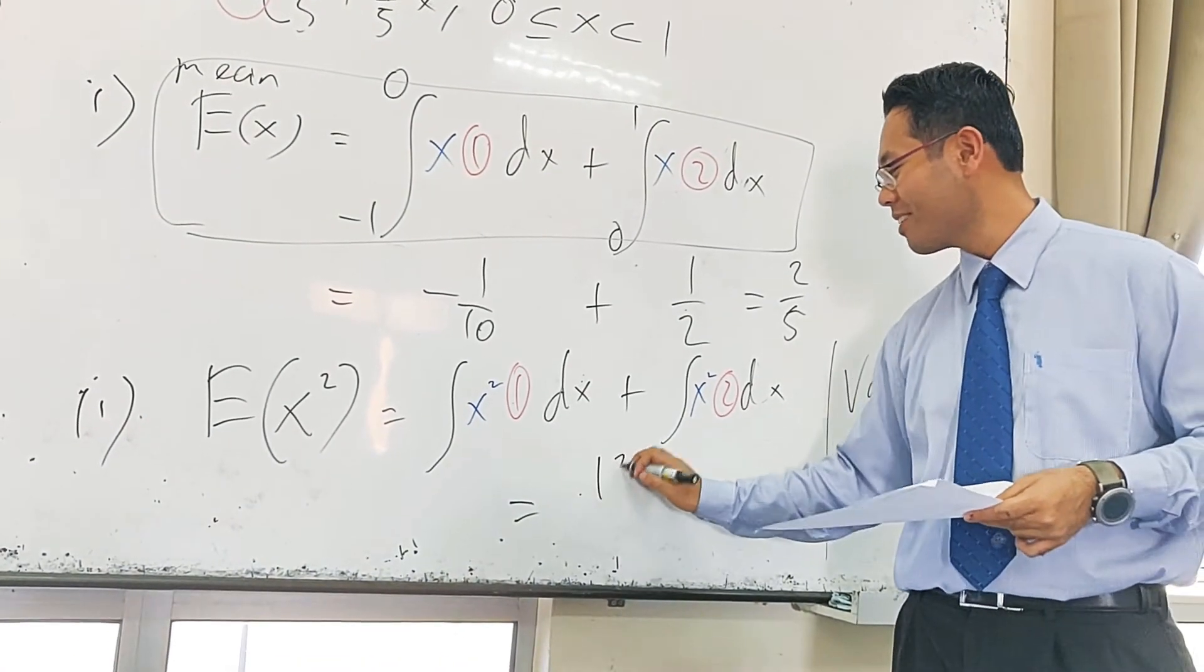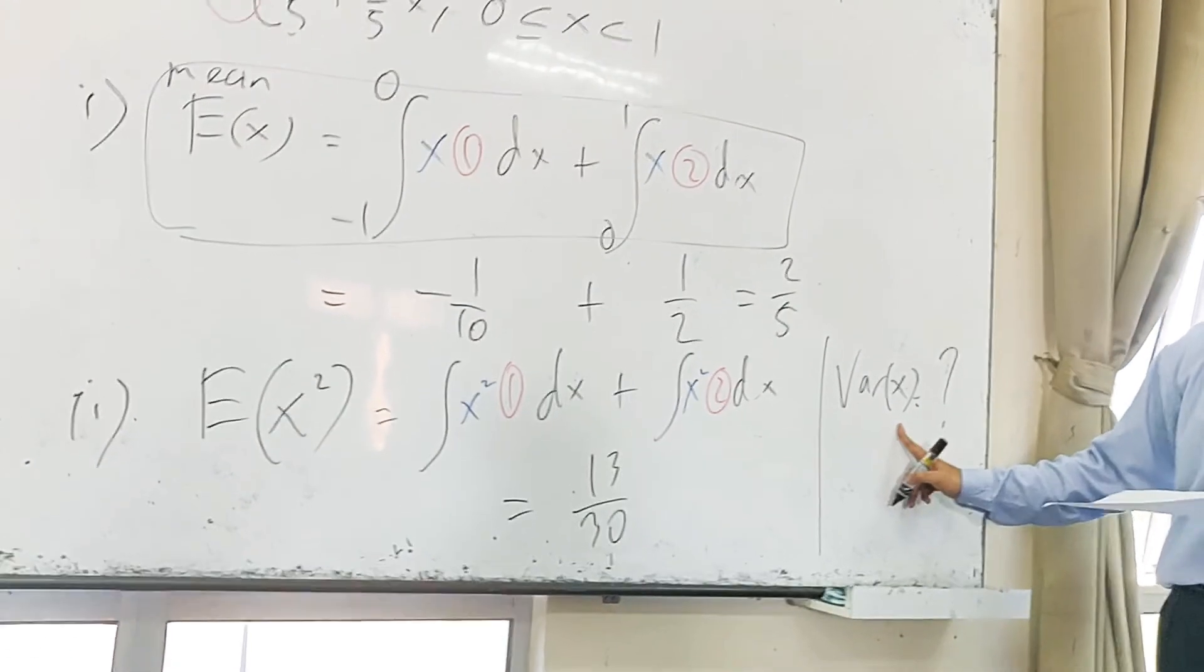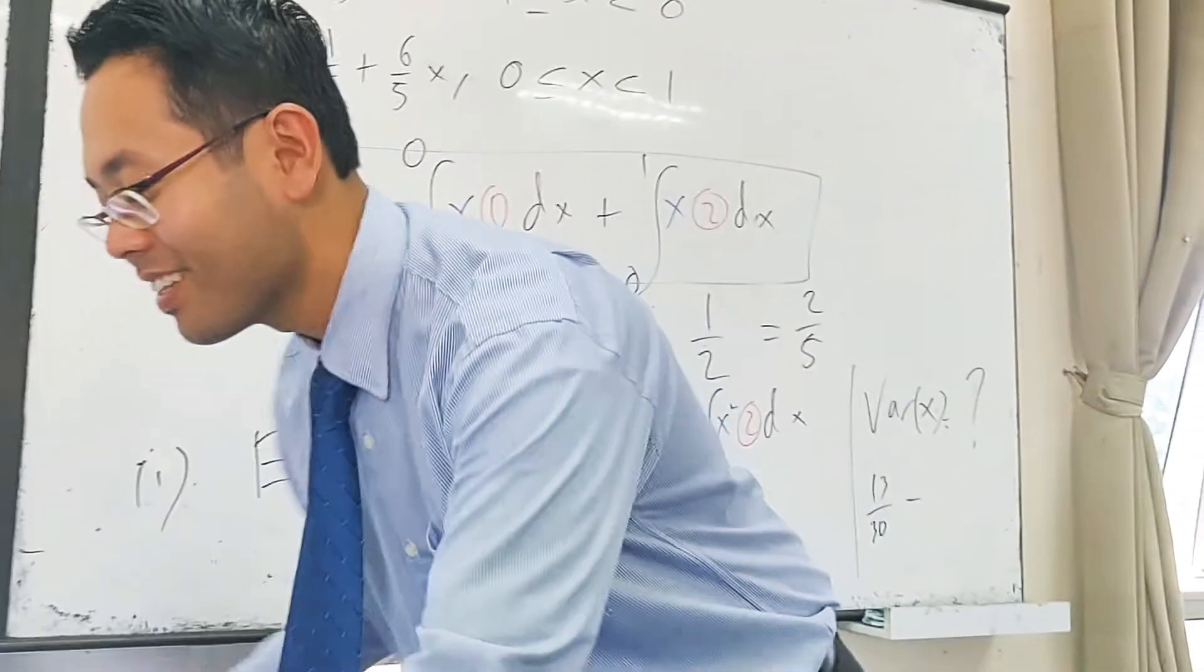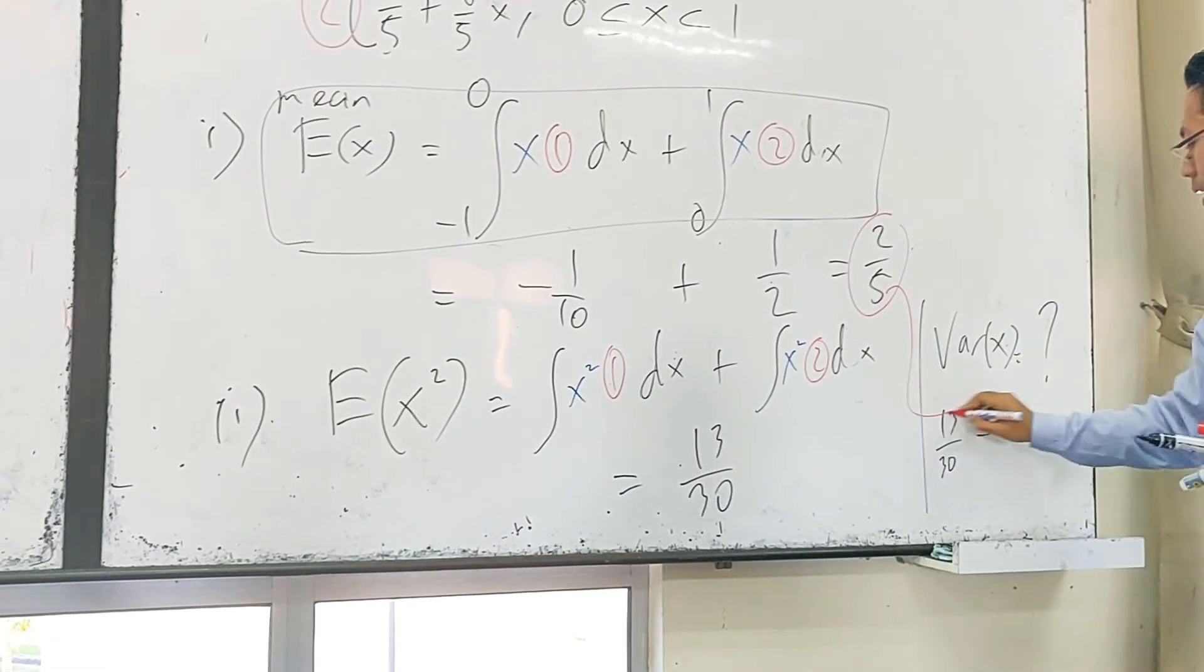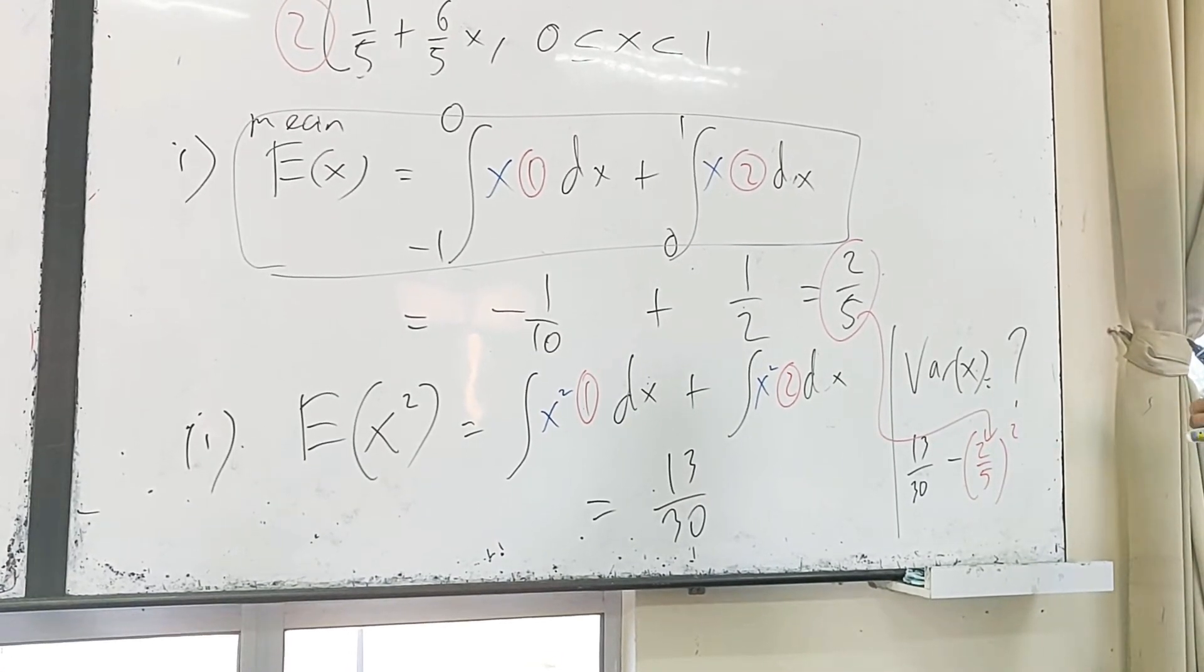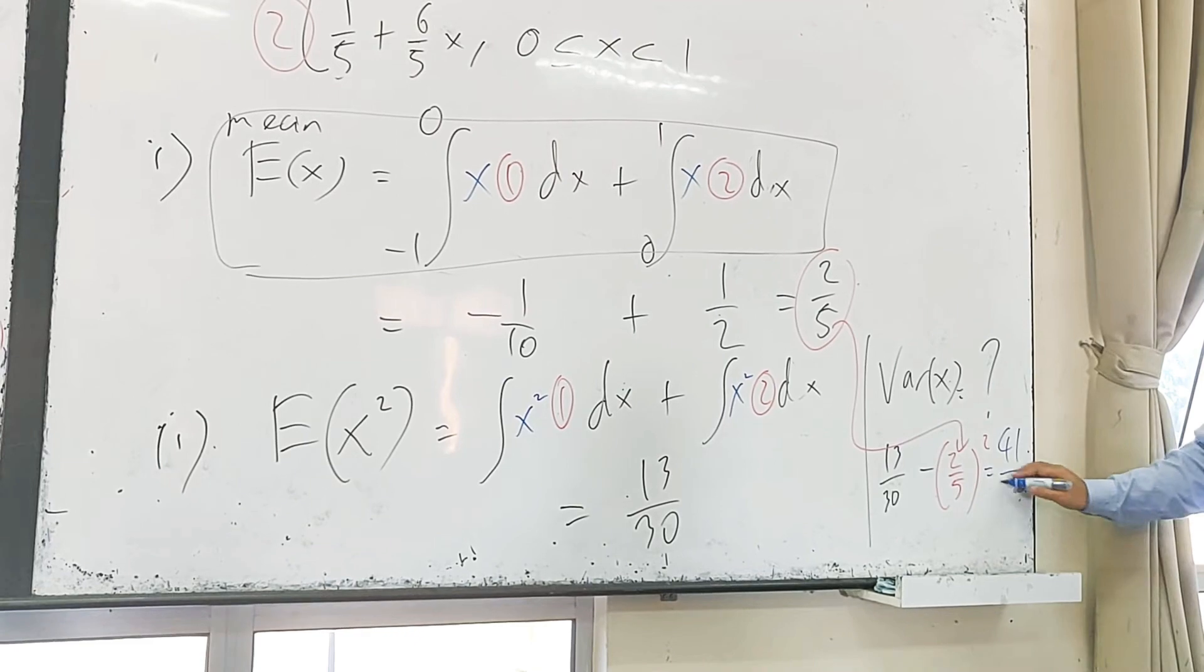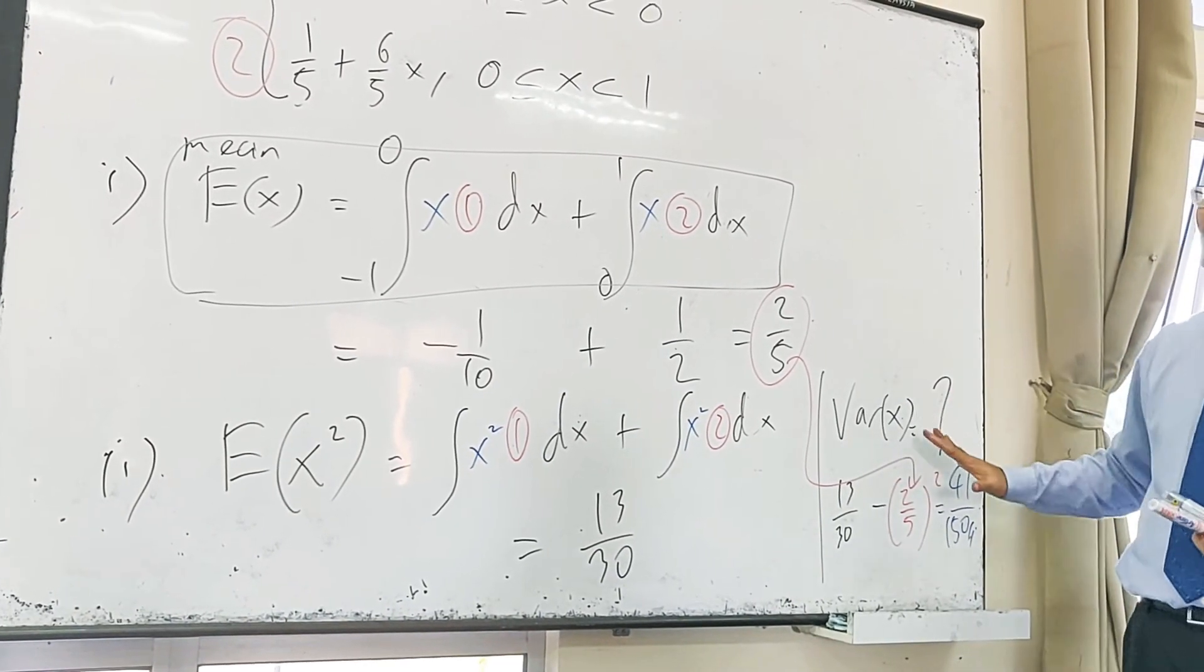The first one you should get yourself 13 over 30. The second part, how do you solve it? Give you 13 over 30 minus this one, 2 over 5 squared, which give you the answer. And you should get that. If you managed to get this one, congratulations.